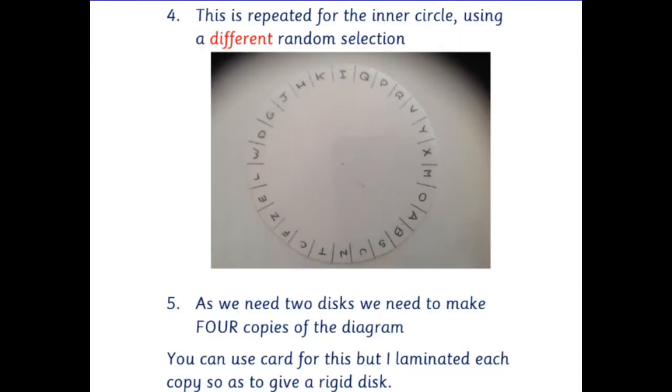This was repeated on the inner circle but using this time a different random selection. We don't want the same sequence as the outer ring. We need two discs so we need to make four copies of the diagram. That's two inner and two outer.